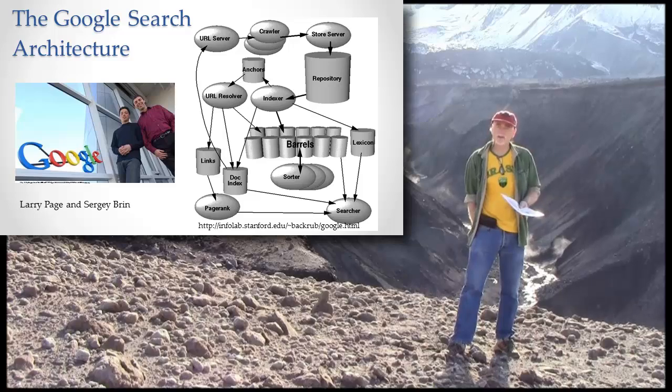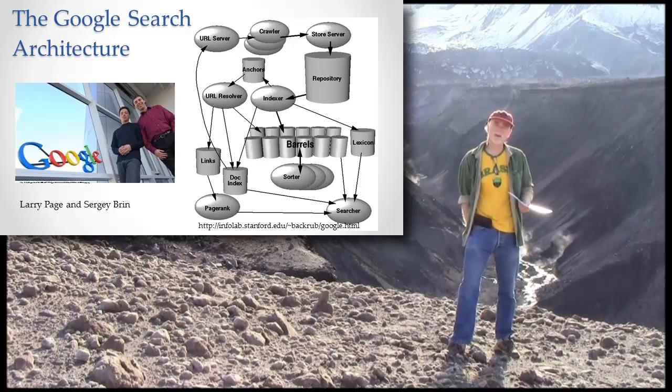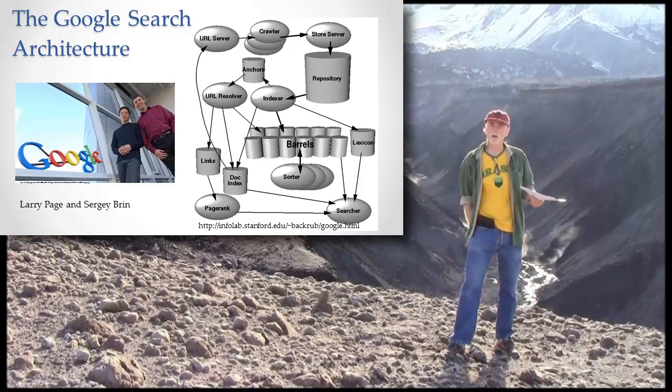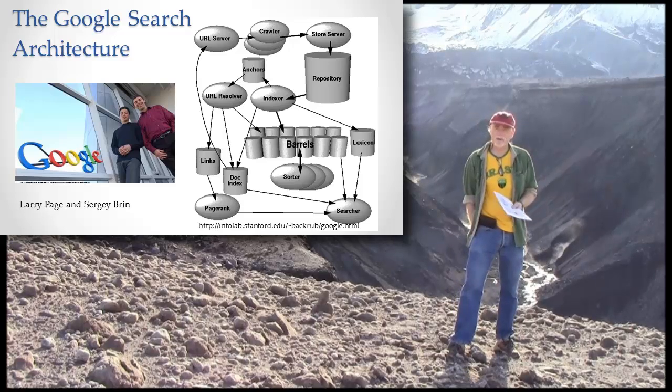So that's something to understand, that the Google search architecture was really the fundamental intellectual property, the fundamental thing that started Google as an empire, and it was created by these two guys that just kind of came up with it. They were computer scientists.